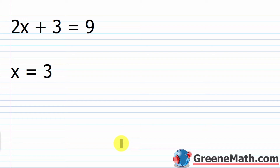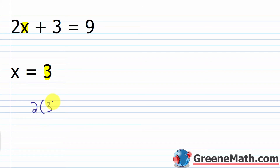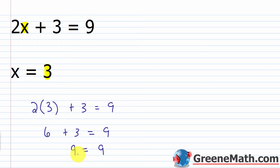Let's take a look at 2X plus 3 equals 9, where X equals 3. The solution to an equation is a number that, when it replaces the variable, gives you a true statement. If X equals 3, plugging a 3 in for X gives us 2 times 3 plus 3 equals 9, which is 6 plus 3 equals 9, so 9 equals 9. The same value on the left as on the right — that's how you know you have the right answer.